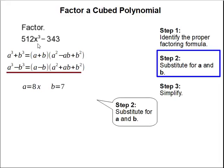512x cubed, the cube root of that is 8x. 343, the cube root of that is 7.